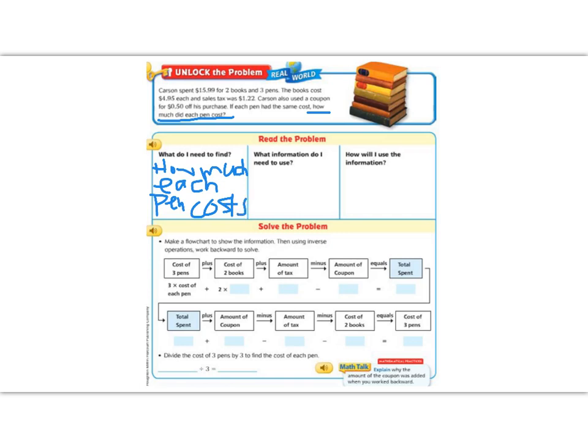The information that we know is that he spent $15.99 on two books and three pens. The books cost $4.95 each and sales tax was $1.22. So the information that we need to use, I'm going to actually write over here so that I have more space, is that he spent $15.99.